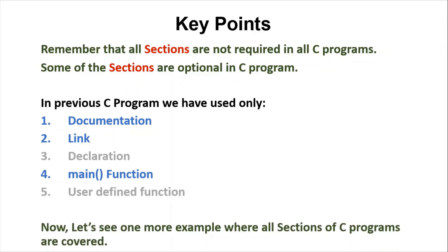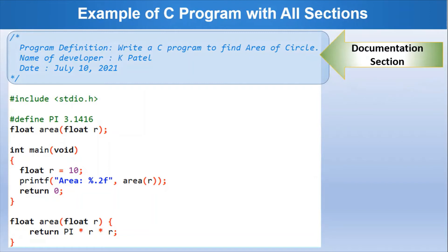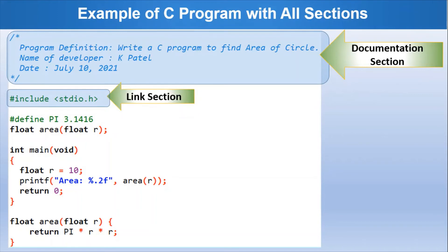Now let's see one more example where all five sections of a C program are covered. For that, we will use a program to find the area of a circle. This is the documentation section where we define program-related information, and this is the link section where we include the stdio.h header file with this program.